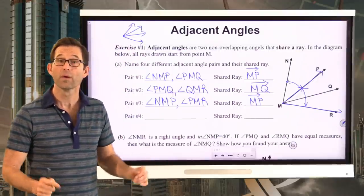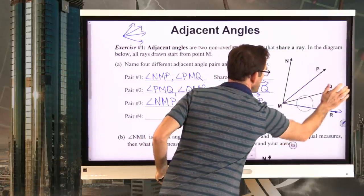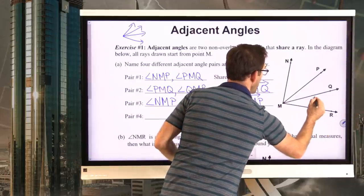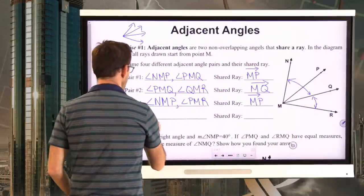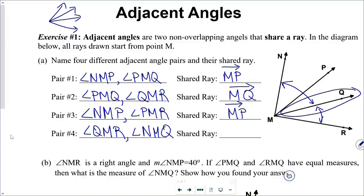Likewise, we could look at angle QMR down here, and that would also be adjacent to another angle. Angle QMR is adjacent to angle NMQ, and they share ray MQ.